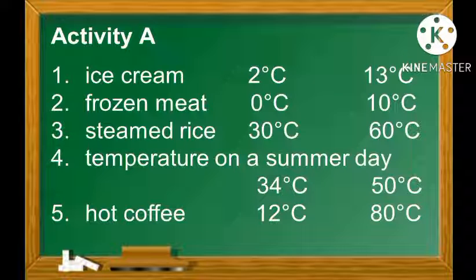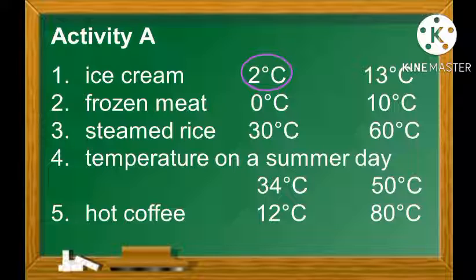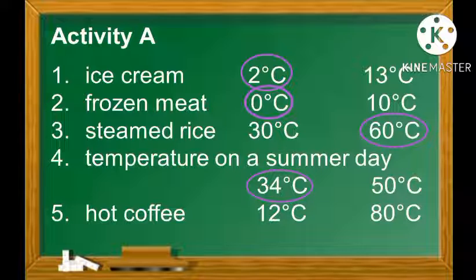Now let's check if your answers are correct. Number 1: Ice cream — 2 degrees Celsius. Number 2: Frozen meat — 0 degrees Celsius. Number 3: Steamed rice — 60 degrees Celsius. Number 4: Temperature on a summer day — 34 degrees Celsius. Number 5: Hot coffee — 80 degrees Celsius.